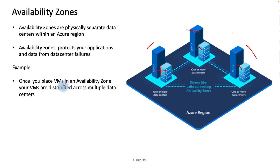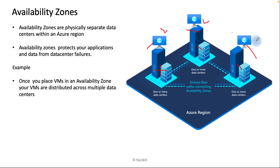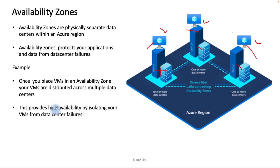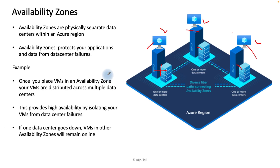Once you place a VM in an Availability Zone, your VMs are distributed across multiple data centers. You can see that once you place your VM in an Availability Zone, it is distributed across multiple data centers in different zones, providing high availability by isolating your VM from individual data center failures.